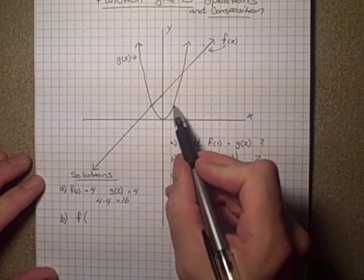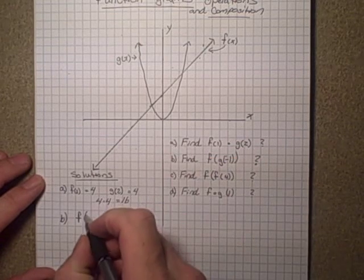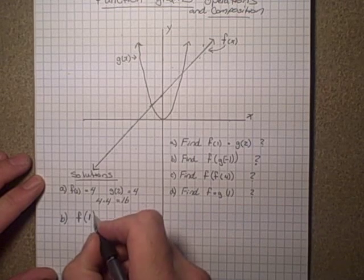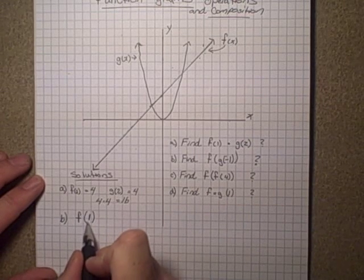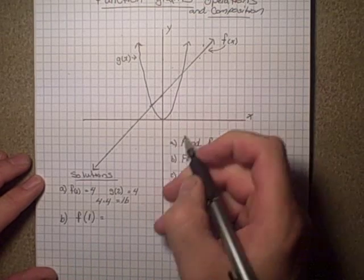We'll look at g(-1). So there's -1 and it goes up to 1, so that would be 1 is our answer for g(-1). Plug that into the brackets so now we've got to look for f(1). f(1) in our case is again going to be that 4.